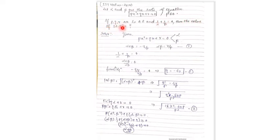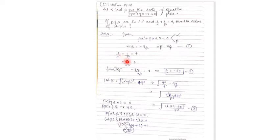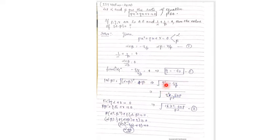Since alpha and beta are the roots, the sum of roots is alpha + beta = -q/p, and the product of roots is alpha·beta = r/p. The condition 1/alpha + 1/beta = 4 gives (alpha + beta)/(alpha·beta) = 4. Substituting the sum and product, we get (-q/p)/(r/p) = 4, so q = -4r. This is our second equation.